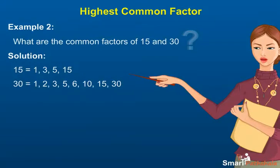The factors of 30 are 1, 2, 3, 5, 6, 10, 15 and 30. The common factors of 15 and 30 are 1, 3, 5 and 15.